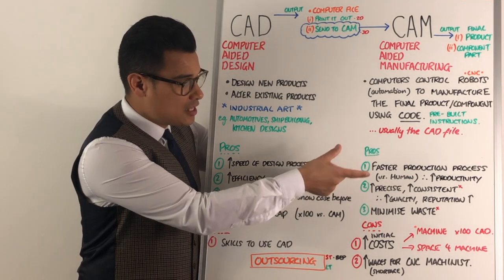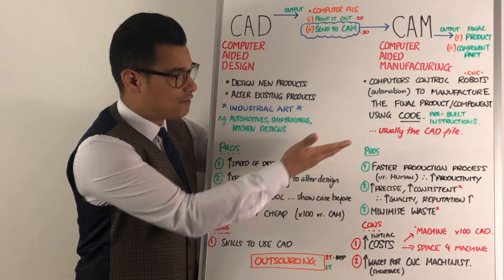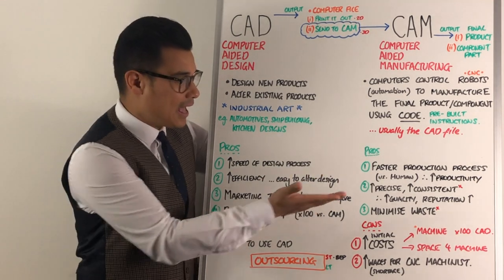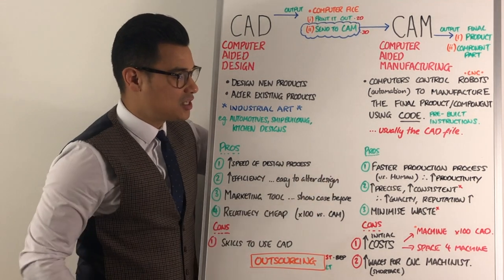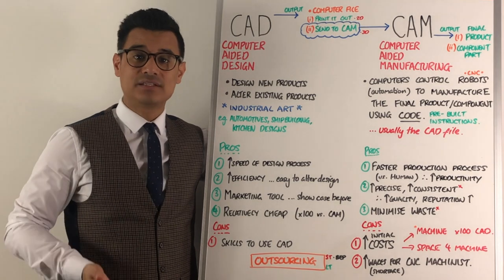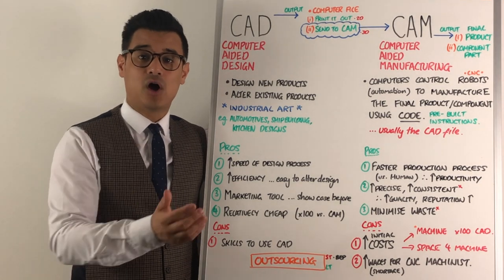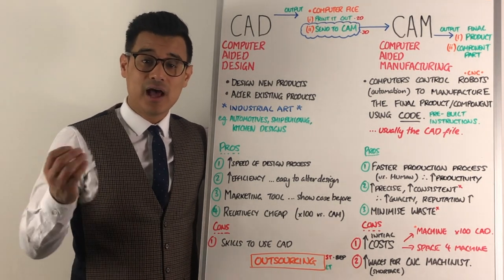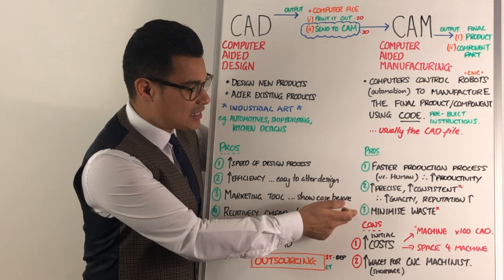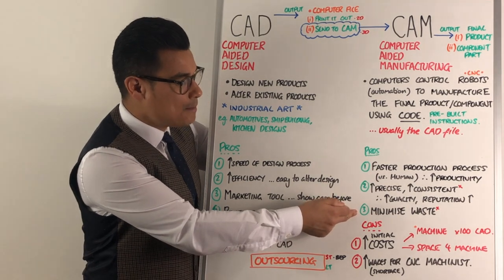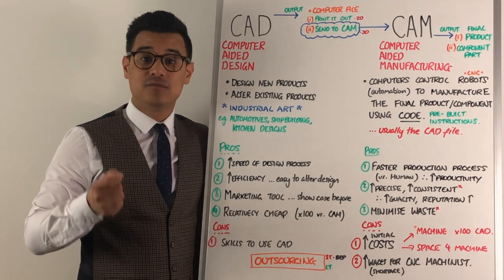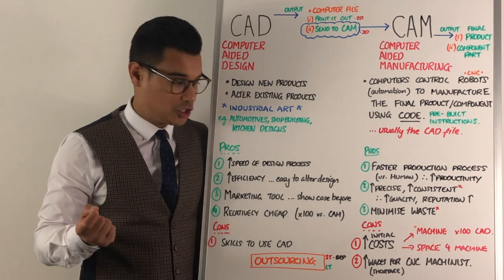Also, the computer just follows the code, so it's going to be more precise, more accurate, and more consistent — which could lead to a more consistent form of quality and a higher reputation. You're also likely to get fewer mistakes, and fewer mistakes means you minimise waste, which means you save on costs.